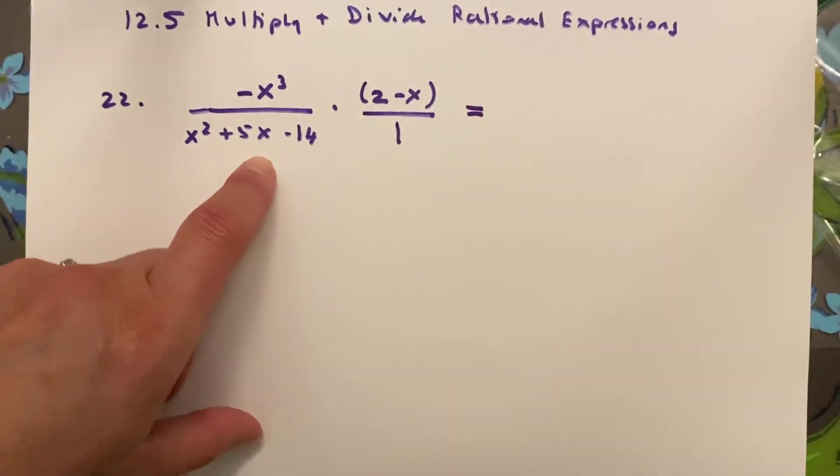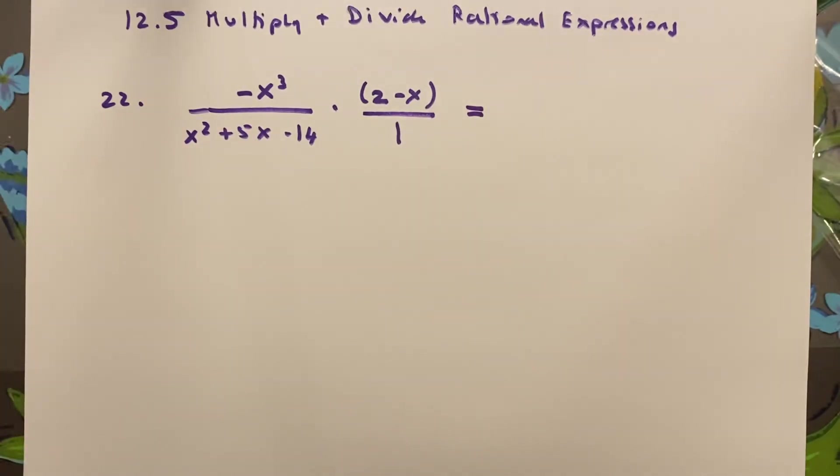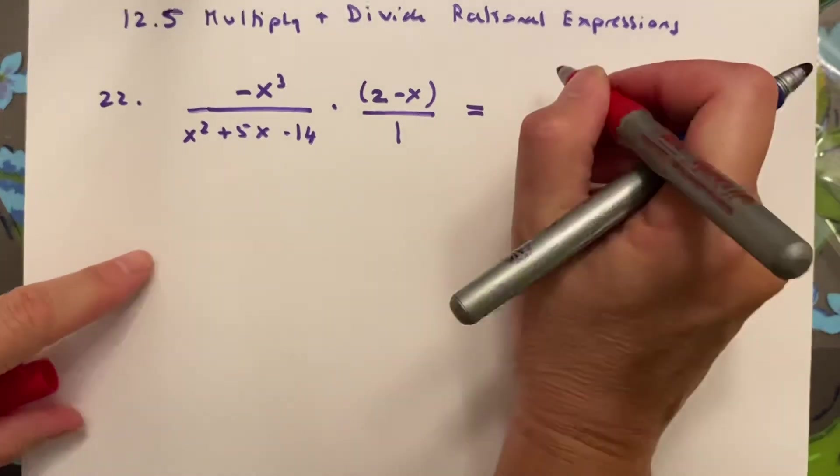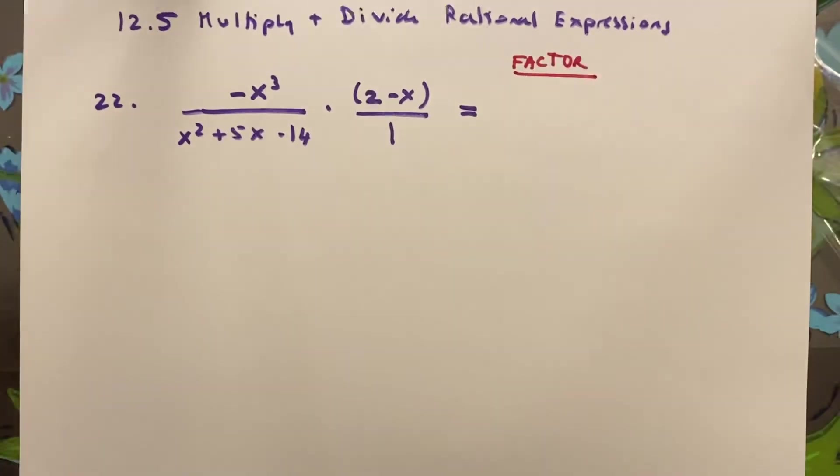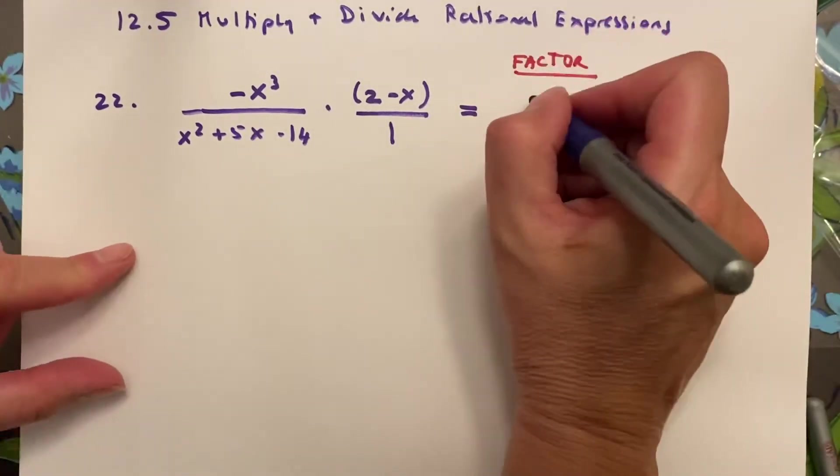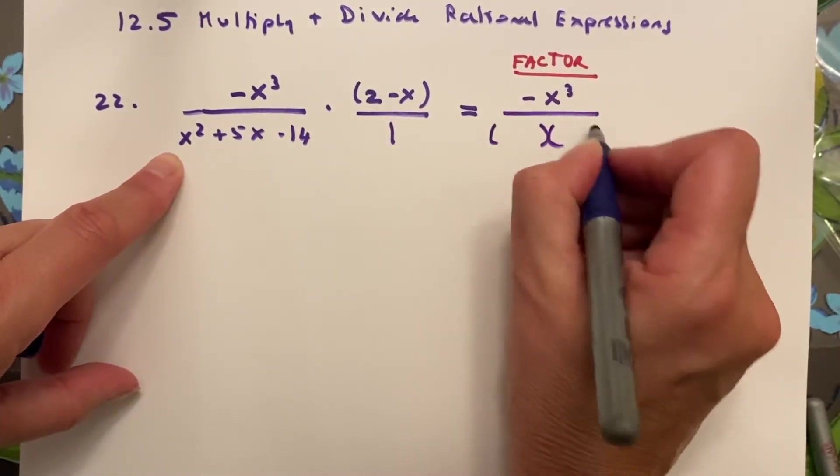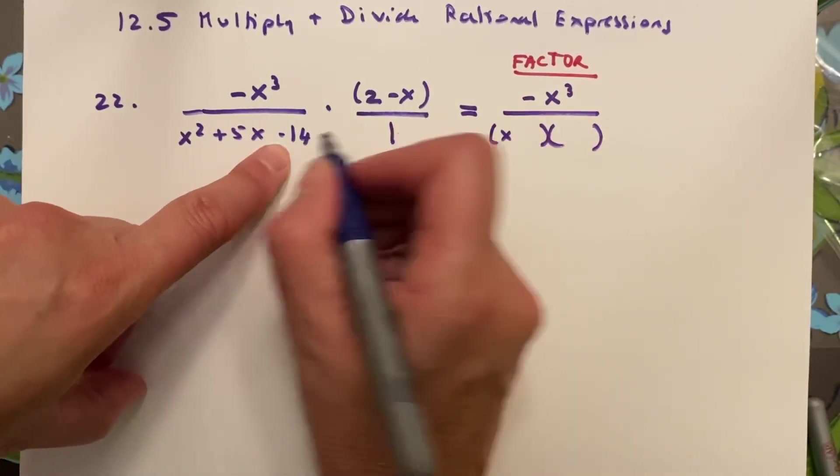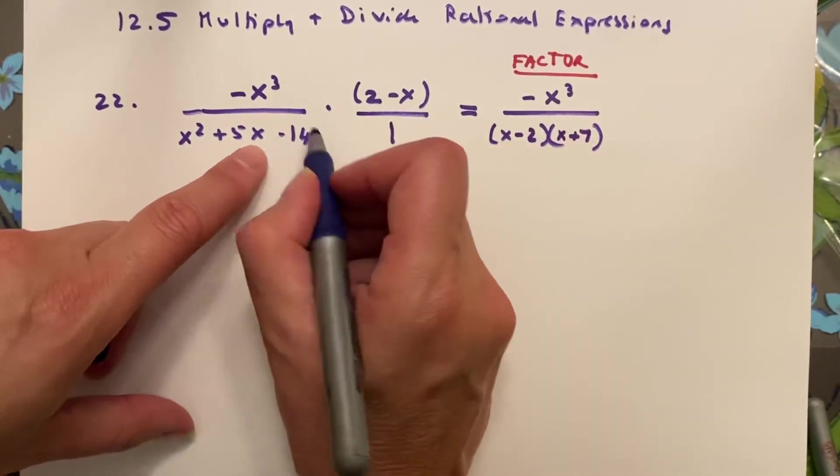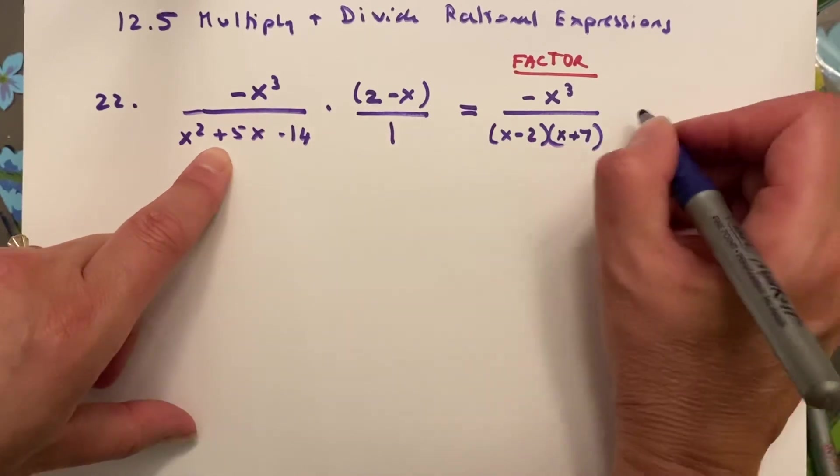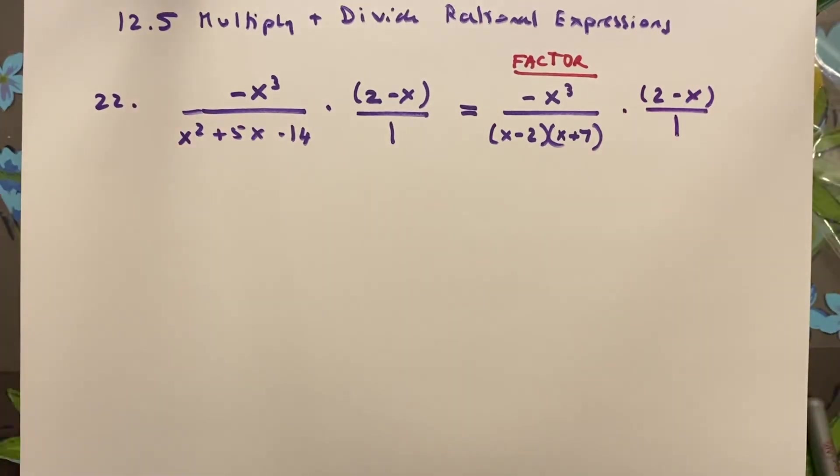Once you've done that, you want to factor everything you can. So that's your first step - you're going to factor everything you can. I can't change this numerator, it's as is, but this denominator could be factored. And I can see that this negative 14 lends itself to x plus 7 and x minus 2 - that'll give me negative 14 but it'll still give me plus 5x. And I'm multiplying by 2 minus x.